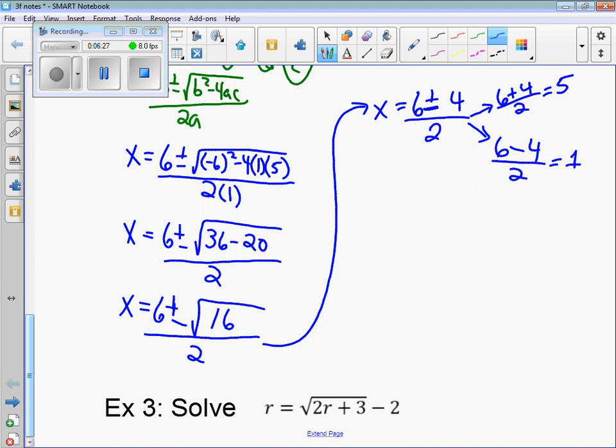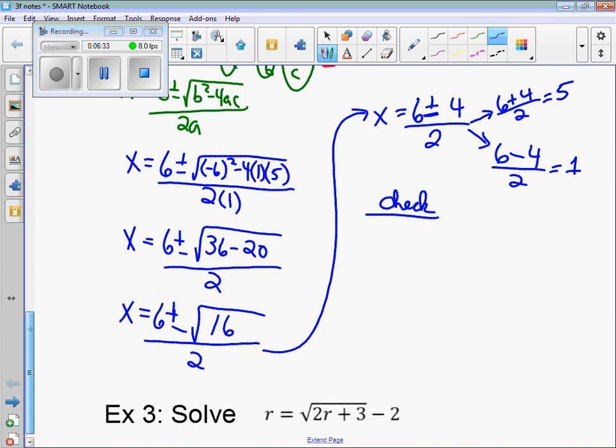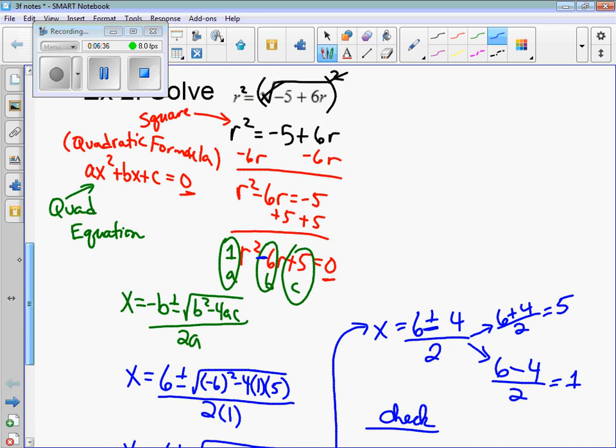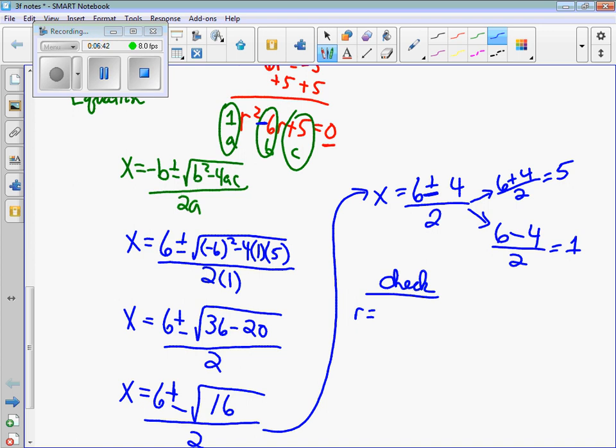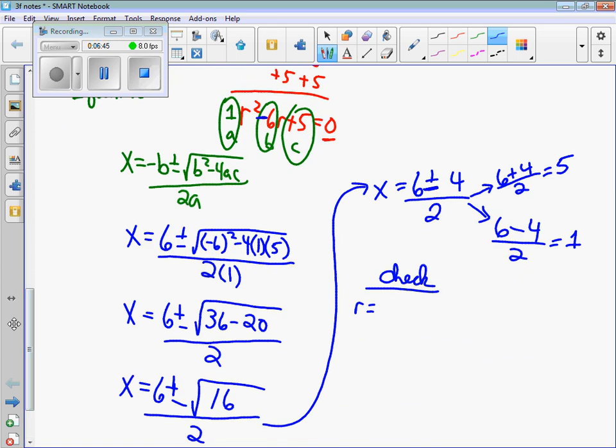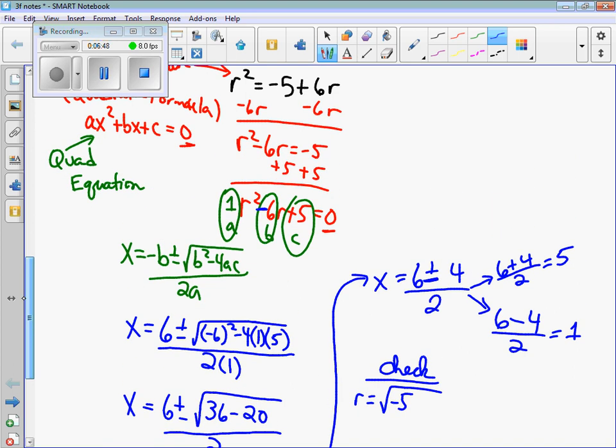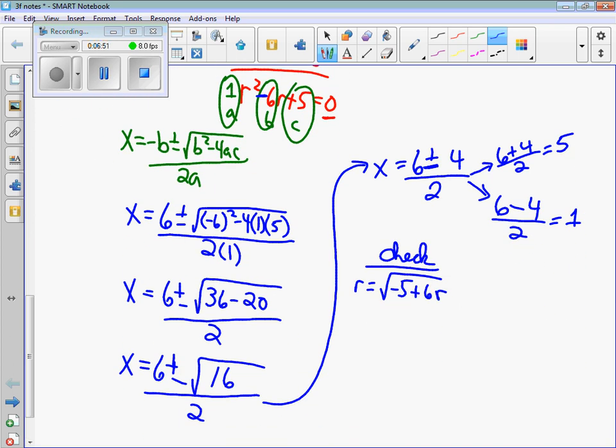You need to check both of these. You don't have to show me the check, but if there's an extraneous solution, that's the only way you're going to know. So we have r equals the square root of negative 5 plus 6 times r. We need to check both 5 and negative 1. So I put 5 in, let's do that first. We have 5 on the left side. Square root of negative 5 plus 30 is the square root of 25. Yep, that is 5. So that's good. So 5 is a good answer.